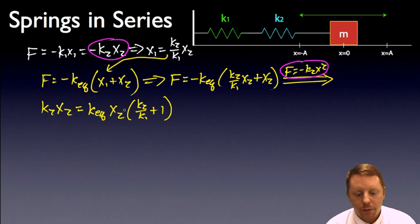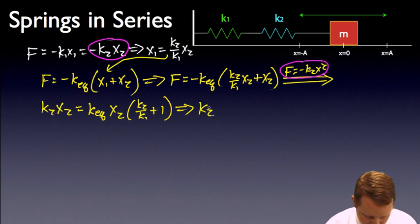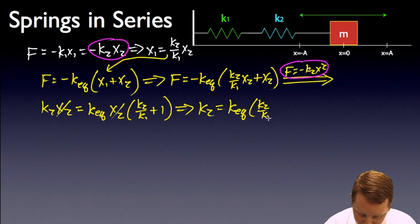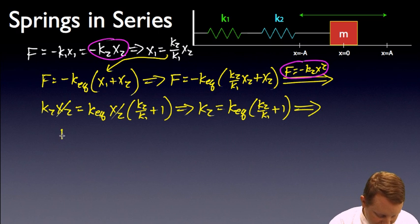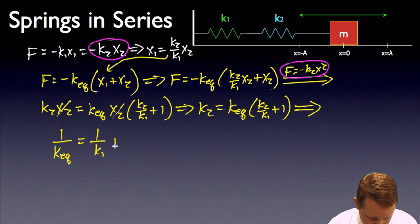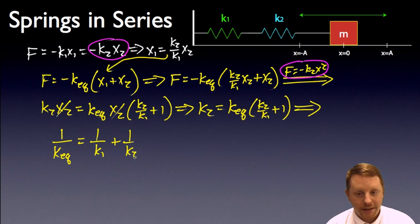Or, going just a little bit further still, divide x2 from both sides, k2 must equal our equivalent k times k2 over k1 plus 1. Or, a little bit more algebraic rearrangement, and I find out that 1 over the equivalent k must be equal to 1 over k1 plus 1 over k2.